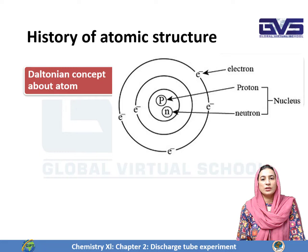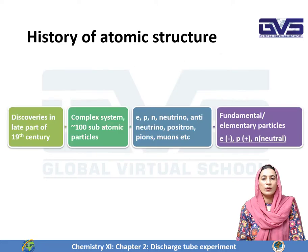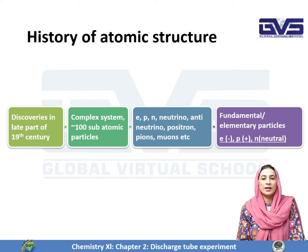Electrons surround the nucleus, and Protons and Neutrons reside in the nucleus. When discoveries started in the late part of the 19th century, it came to be known that the Atom is actually a complex system consisting of more than 100 particles, including Electrons, Protons, Neutrons and others like Neutrinos, Anti-Neutrinos, Positrons, Mesons, Pions, etc.